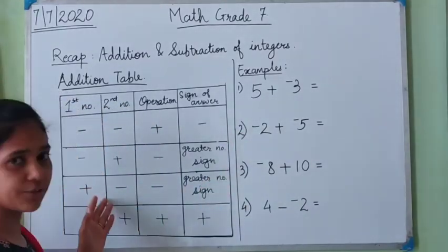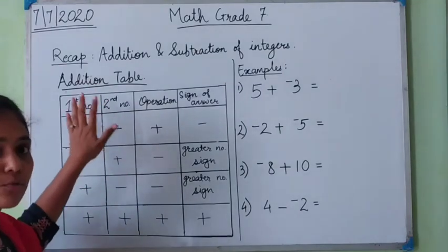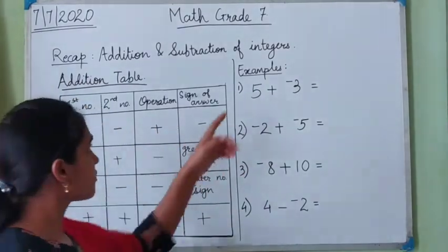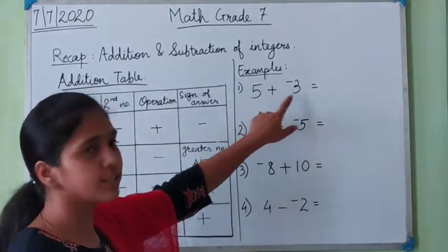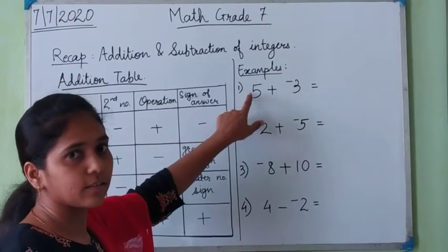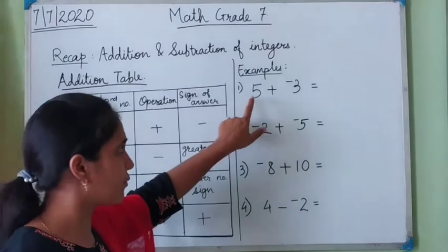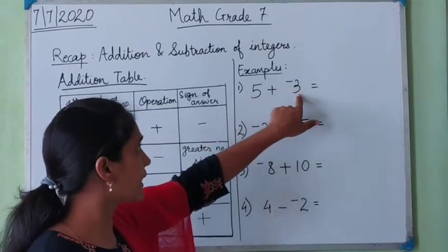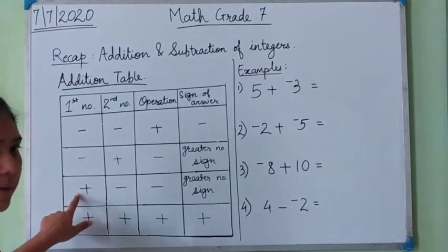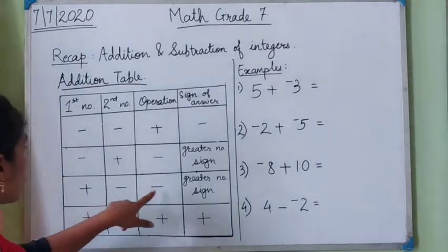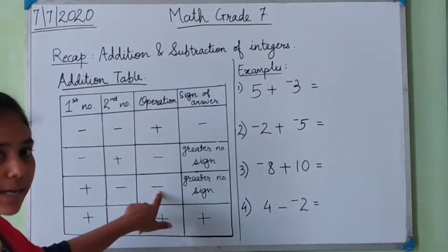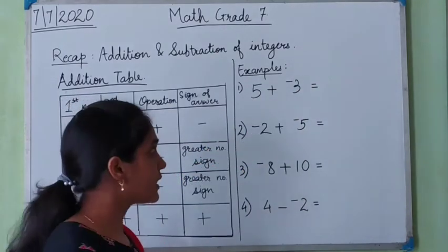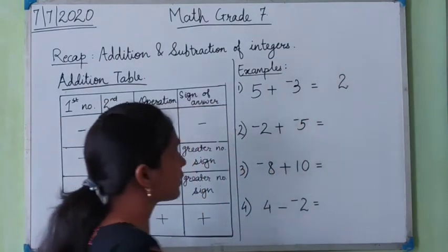Let us use this addition table — it applies for addition as well as subtraction. In the first example, the first number has no sign, which means it is positive, and the second number has a negative sign. So the first number is positive and the second number is negative. The operation we have to do is subtract. We subtract 3 from 5: 5 minus 3 is 2. So I write 2 here as the answer.